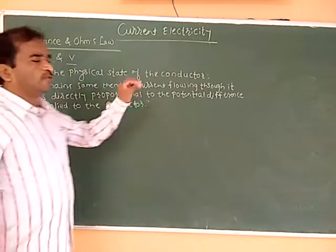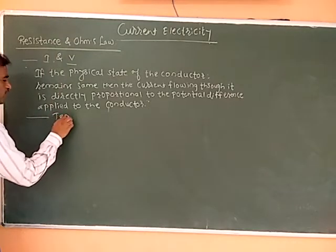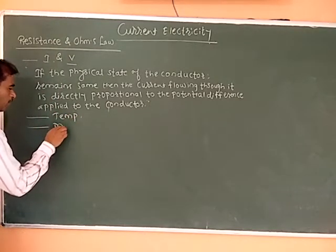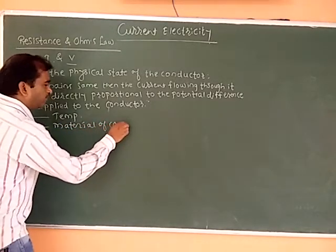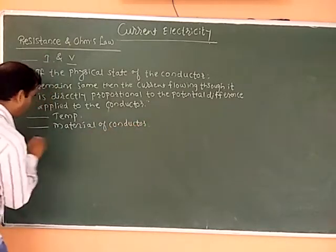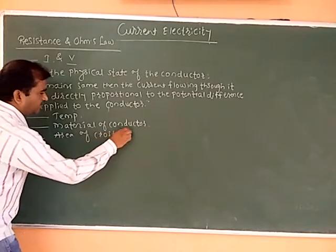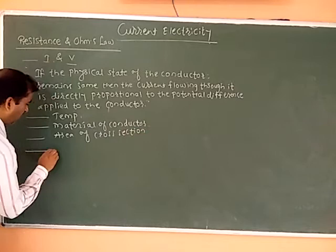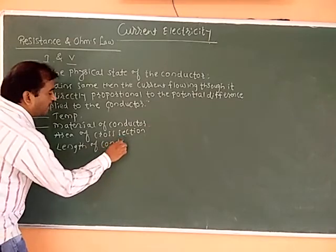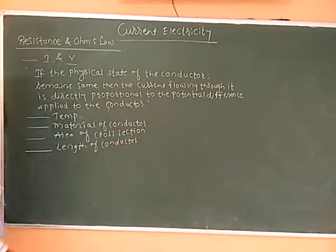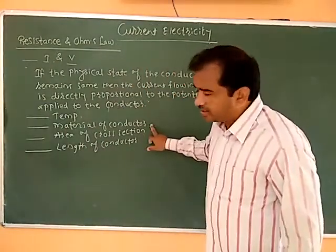What are the physical states of the conductor? The physical states are: temperature of the conductor, material of the conductor, area of cross-section, and the length of the conductor. These four physical states remain constant — temperature is constant, material is constant, area of cross-section is constant, and length is constant.